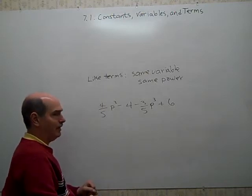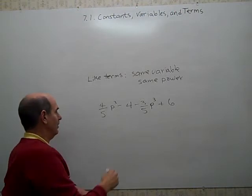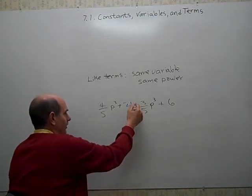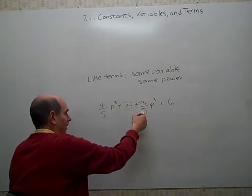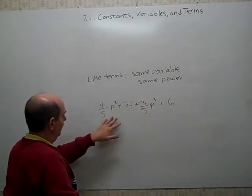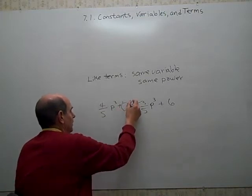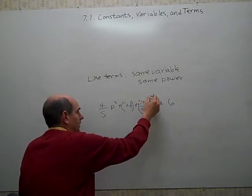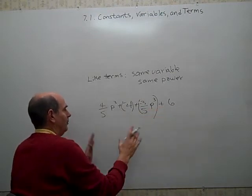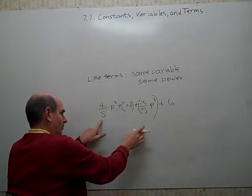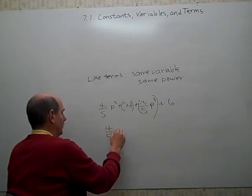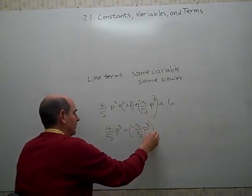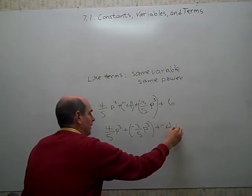So I'm going to make this, I'm going to keep change change. Make it plus negative 4. Keep it negative 4. Change this. And I can put a negative sign with the 3 or with the 5. So now my problem is 4 fifths p to the third, plus negative 4, plus, I'm just doing this to kind of separate that addition sign from the negative sign. Plus negative 3 fifths p to the third, plus 6. Now I can put the terms that are like each other together. I'm going to rearrange these additions. Negative 4 fifths p to the third, plus negative 3 fifths p to the third, plus negative 4, plus positive 6.